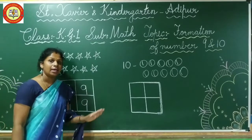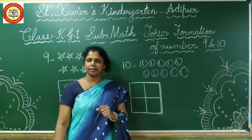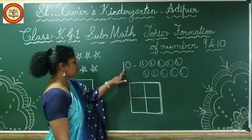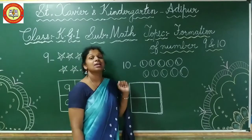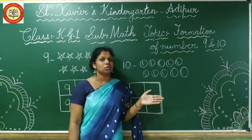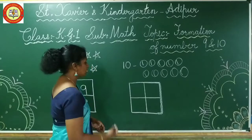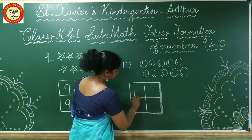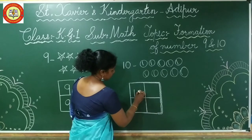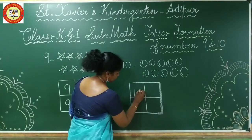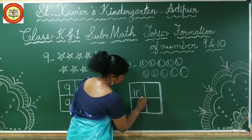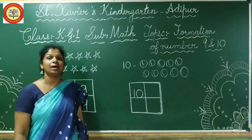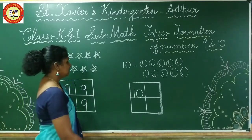And now we are looking at number 10. It is very very easy. This is number 1 and this is 0. 1 and 0 makes number 10. So let's try — starting line. This is number 10.